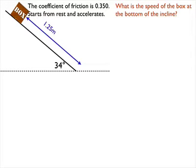This is the video solution to one of the example problems involving free-body diagrams. The problem states the coefficient of friction is 0.350. It starts from rest and accelerates down the ramp for a distance of 1.25 meters. The question is, what is the speed of the box at the bottom of the incline?